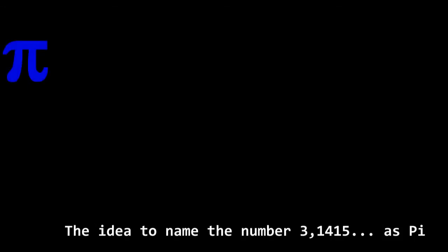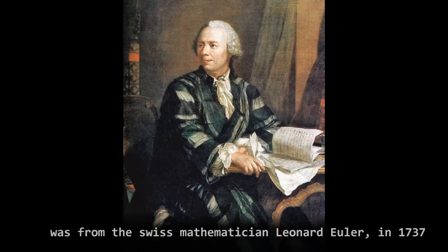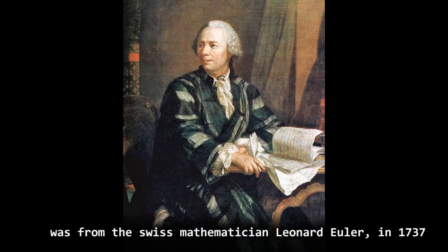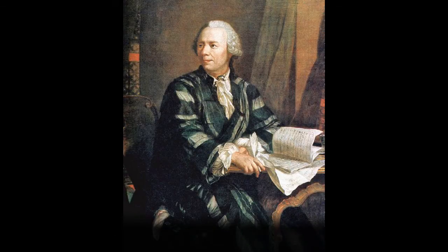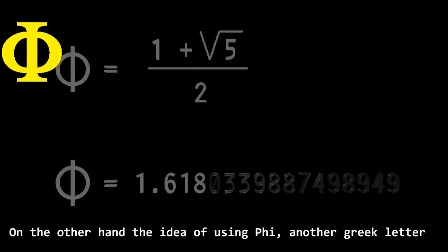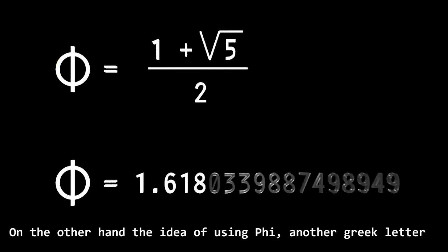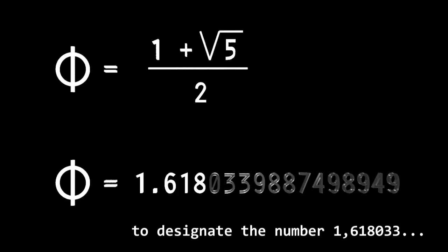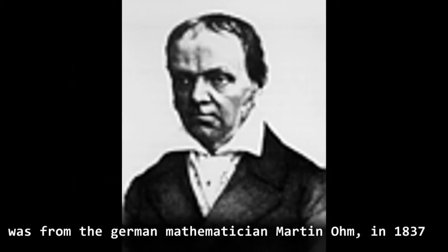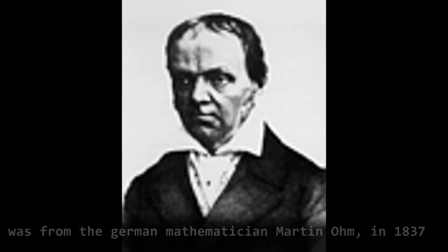The idea to name the number 3.1415 etc. as Pi was from Swiss mathematician Leonhard Euler in 1737. On the other hand, the idea of using Phi, another Greek letter, to designate the number 1.618033 etc. was from German mathematician Martin Ohm in 1837.